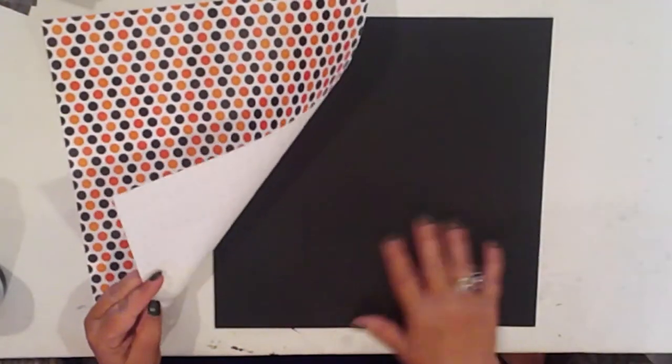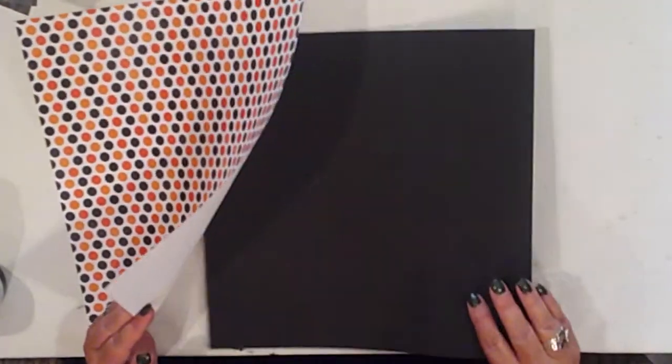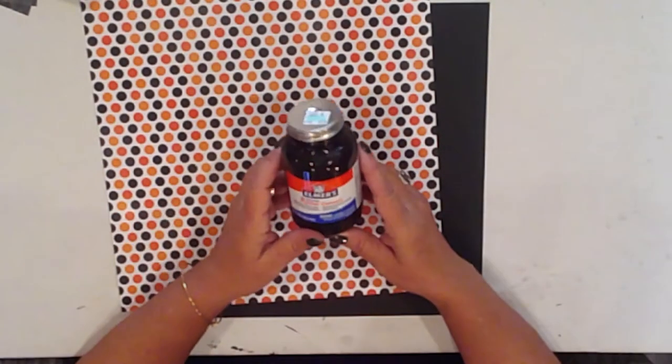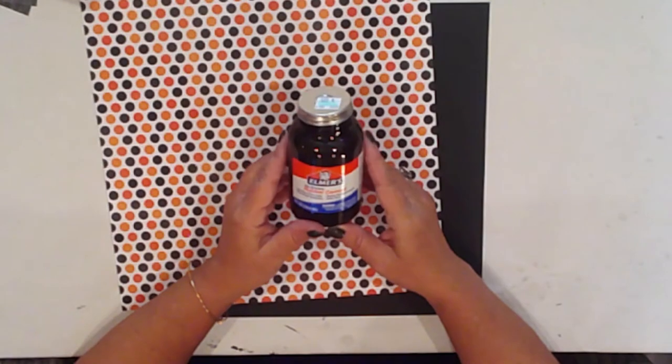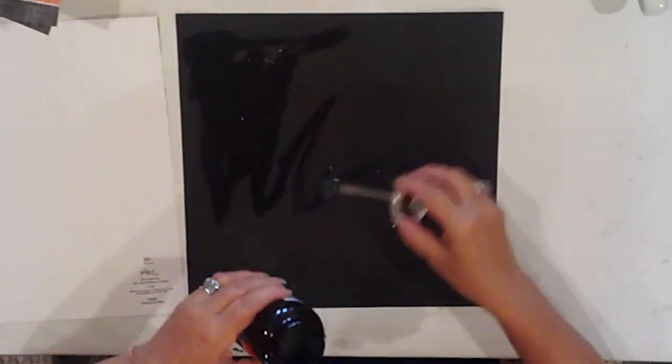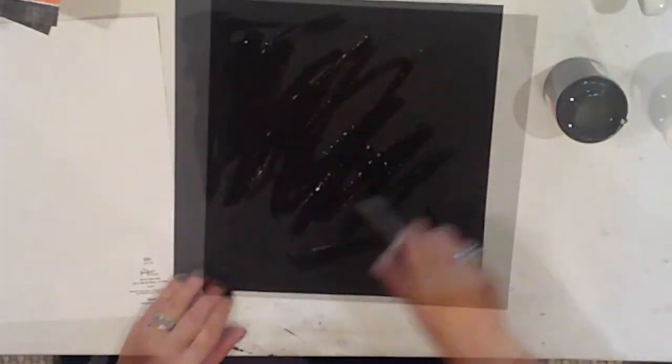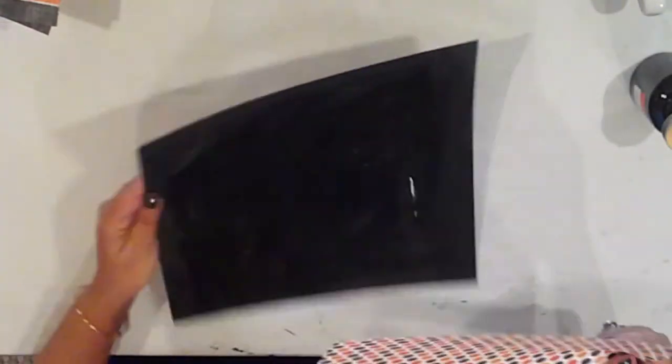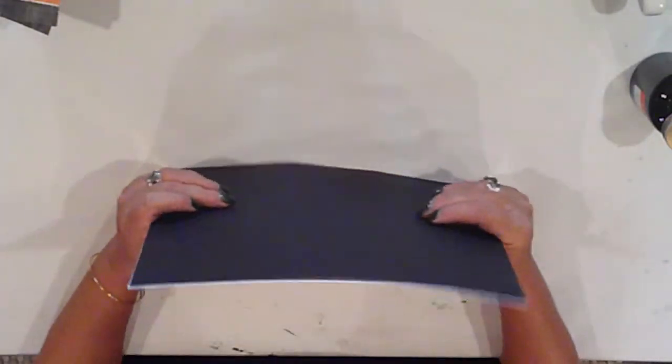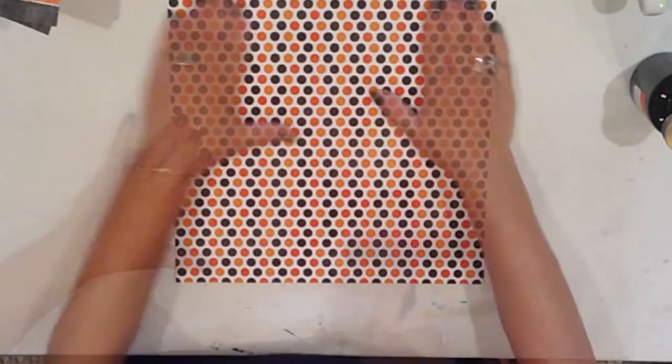To make the circus tent top, I'll use this cute Halloween polka dot scrapbook paper and I'll glue it to some cardstock to give it some body. I'm using Elmer's rubber cement, but you could use any glue that you would normally use for paper.